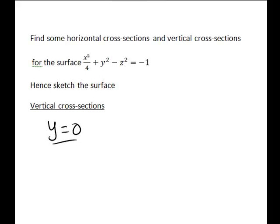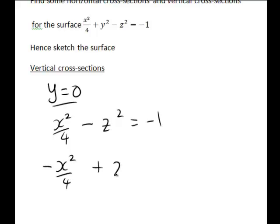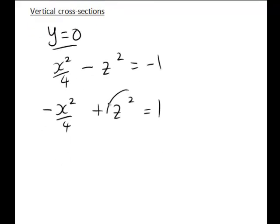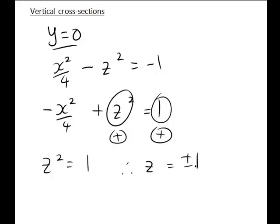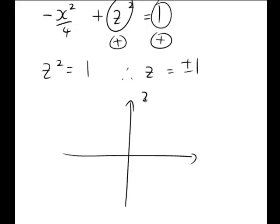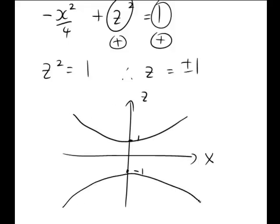Similarly, substituting y equals 0 gives x squared divided by 4 minus z squared equals negative 1. Multiplying through by negative 1 again gives a difference of squares with a positive constant — so again a hyperbola with z-intercepts at z equals plus or minus 1. The main difference is that we have negative x squared divided by 4 rather than negative x squared, which makes this hyperbola wider.